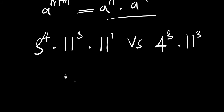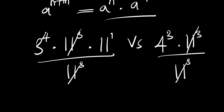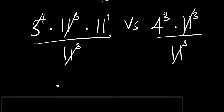We can now divide each part by 11 raised to the power of 3. The 11^3 terms cancel on both sides, leaving us with 3 raised to the power of 4 times 11, versus 4 raised to the power of 3.